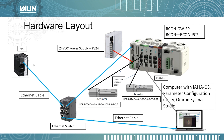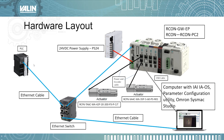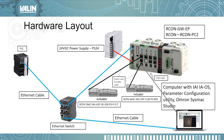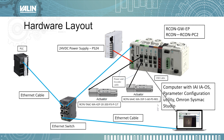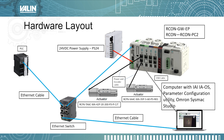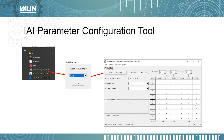This PLC can be any PLC with an Ethernet IP scanner — it can be Mitsubishi, Siemens, or Allen Bradley; they all will work. I also have my computer connected via USB cable to the Archon gateway, and an Ethernet cable from my computer to the switch. The software I need is IA-OS and the Parameter Configuration Utility, and I'm using Omron Sysmac Studio to manipulate the data and show how it works. First and foremost, you need to launch the Parameter Configuration Tool.